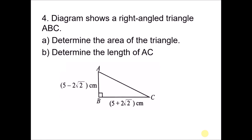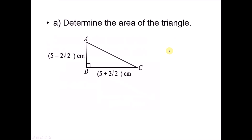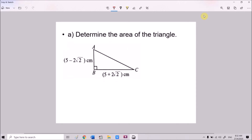For question 4, a diagram shows a right-angled triangle ABC. Part A asks us to determine the area of the triangle, and Part B asks for the length of AC, given the sides are in surd form. For the area, we use the formula: Area = ½ times base times height, which is ½ times (5 + 2√2) times (5 − 2√2).